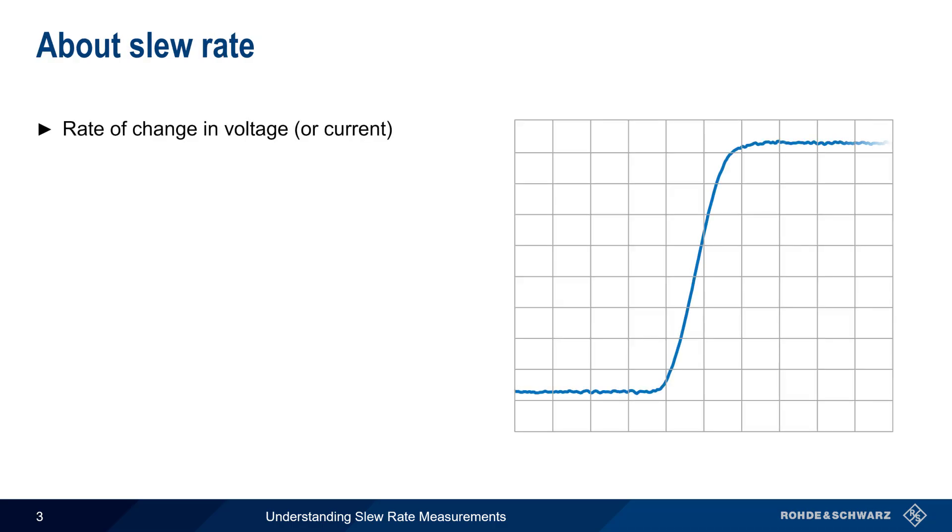Slew rate is the rate at which voltage or current changes over time. Measuring and or controlling slew rate is very important in a wide variety of applications.